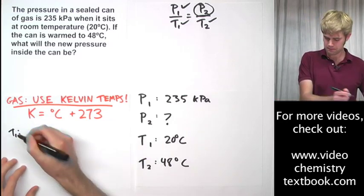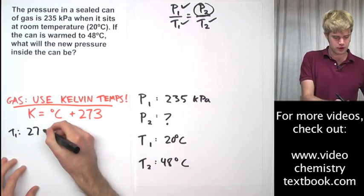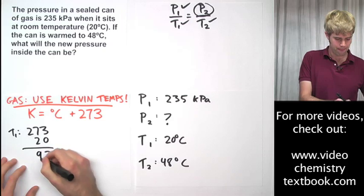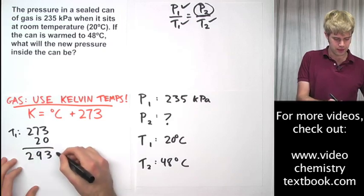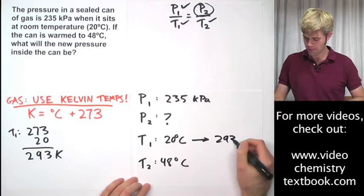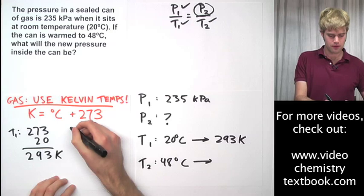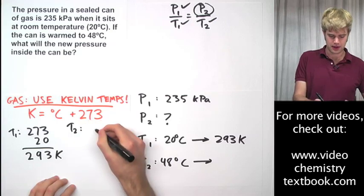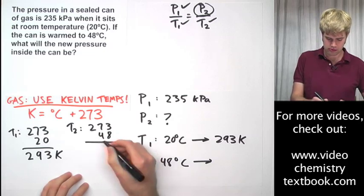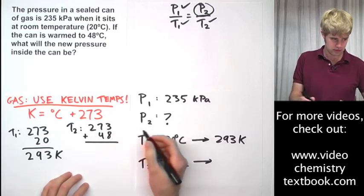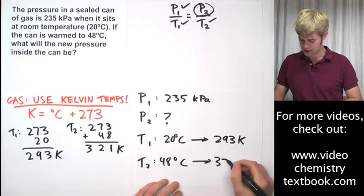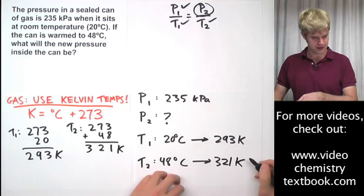So for T1, we're going to take 273 and we're going to add 20 to it. And so, now we're going to have 293 Kelvin for T1. And T2 is going to be 273 plus 48. So this is going to be 321 Kelvin.